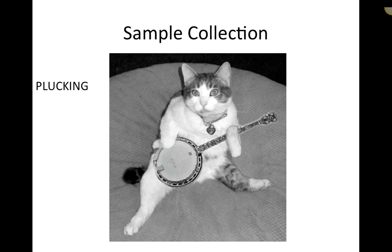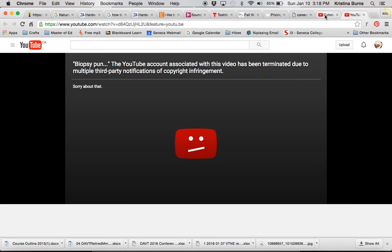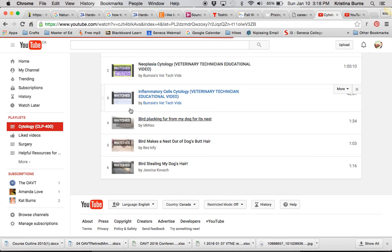Lastly, we have plucking. We use plucking fairly often for dermatophytes — looking at fungal hyphae and dermatophytes growing within the root of the hair. Cytologically, plucking is definitely valuable and we also use it to send a sample away for culture and sensitivity or for dermatophyte testing in agar. It's required specifically to isolate dermatophytes or to perform culture and sensitivity, and it's excellent when parasites are suspected, especially any stuck to the follicle of the hair.